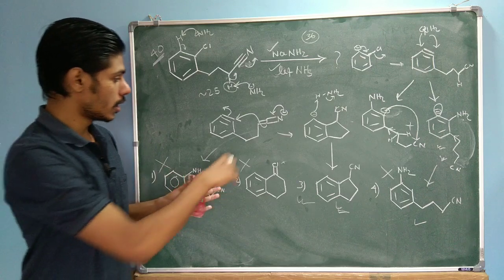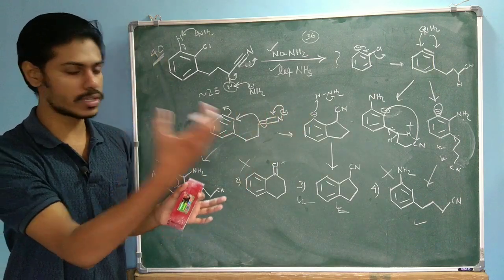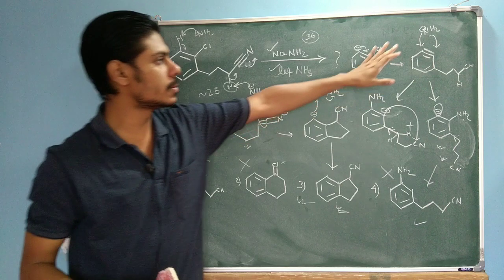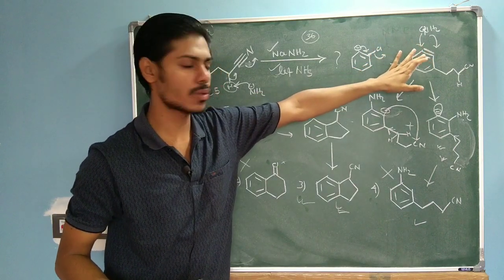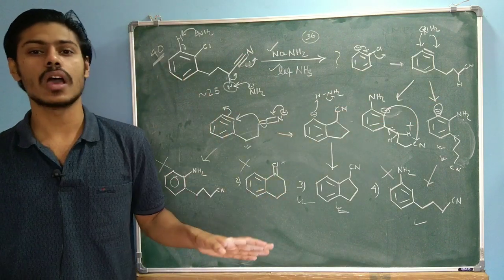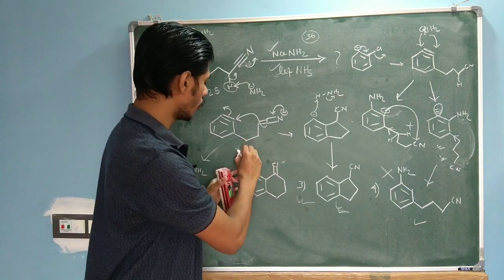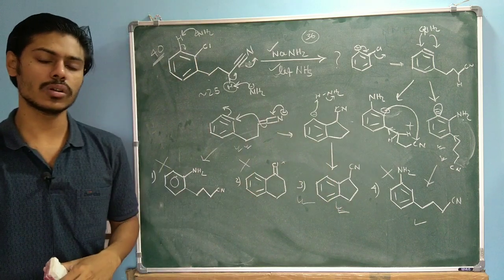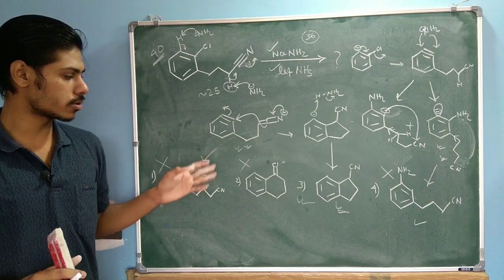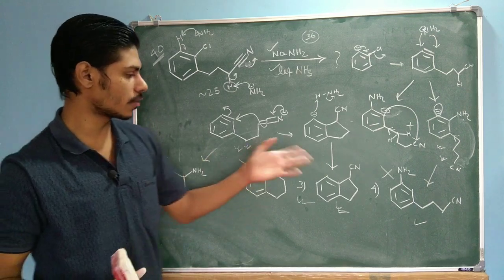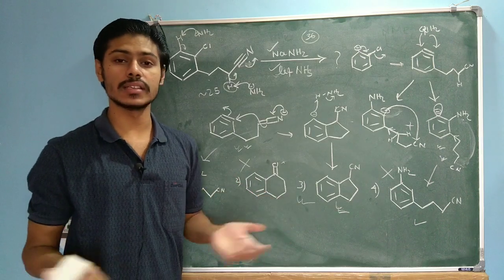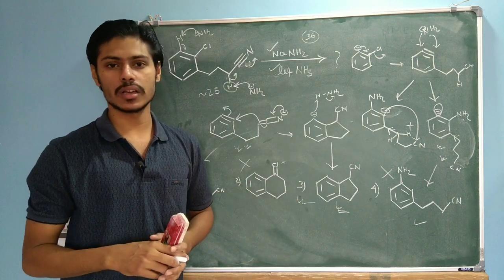Once you have the alpha-carbanion, there is one site in the molecule that can attack the benzyne intramolecularly. In contrast, if the external NH₂⁻ had to attack the benzyne, that would be an intermolecular reaction. Intramolecular reaction is always favored over intermolecular reaction. So the intramolecular pathway wins, and you get product 3 as the correct product. This is how you solve this type of question.